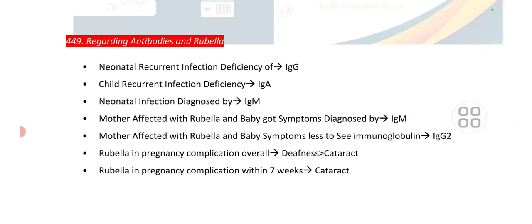Point number 449 is regarding rubella and neonatal/recurrent infections. The deficiency in a child with recurrent infections is of IgA antibody. Neonatal infection is diagnosed by IgM.